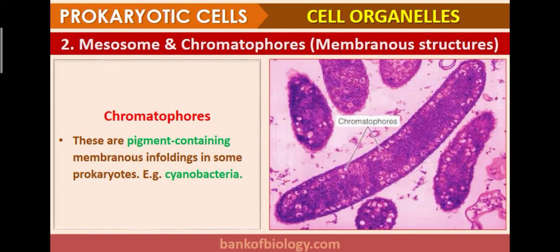Chromatophores are pigment-containing membranous foldings found in some prokaryotic bacteria like cyanobacteria. These are the pigment-containing cell organelles — the color of the bacteria can be determined from them. Chromatophores are especially found in gram-negative bacteria because they are pinkish in color.